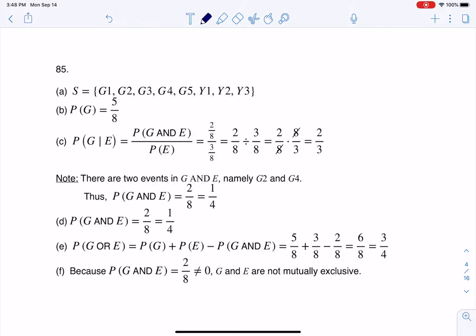Hey Math43, I had a question coming out of chapter 3, number 85, and here we're given 8 cards. 5 are green, 3 are yellow, and we're going to draw 1 card.